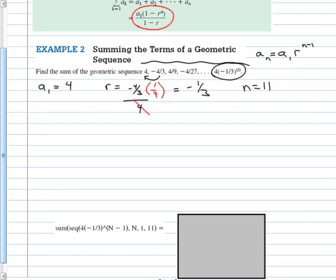Let's apply it. We have first term, 4. Times 1 minus our common ratio, negative 1 third, which we are going to have to raise to the n power, which is 11. And then all of that divided by 1 minus the negative 1 third.